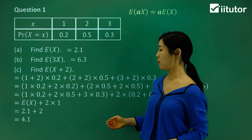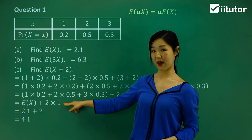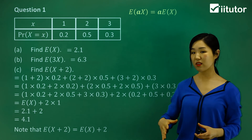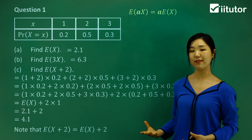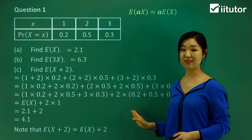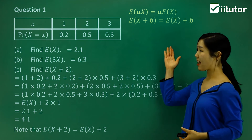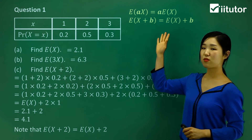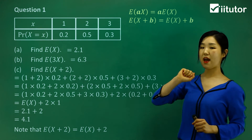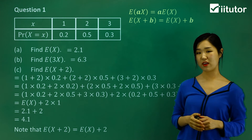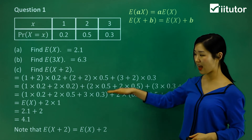Hopefully you can see the relationship: expected value of x plus 2 becomes E(x) plus 2. The 2 has just popped out, and we add it to our original expected value. This brings our second theorem: expected value of x plus some constant b — the b can just pop out, and we add b to E(x). So E(x + b) = E(x) + b. That's another theorem you must remember.